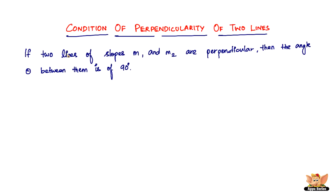If two lines of slopes m1 and m2 are perpendicular, then the angle theta between them is 90 degrees. This is not very different from the previous video where we did the condition of parallelism of two lines — here we are doing the condition of perpendicularity, just the opposite. We do know that if two lines are perpendicular then the angle theta between them is 90 degrees — no doubt about that.